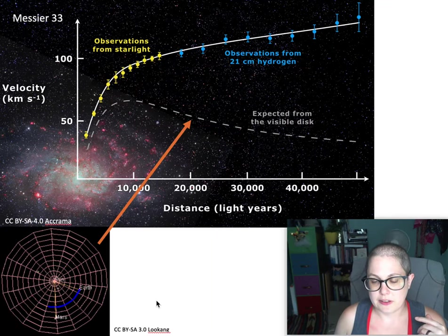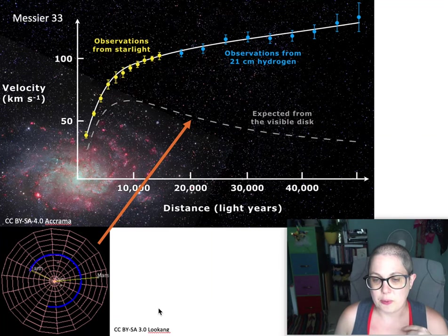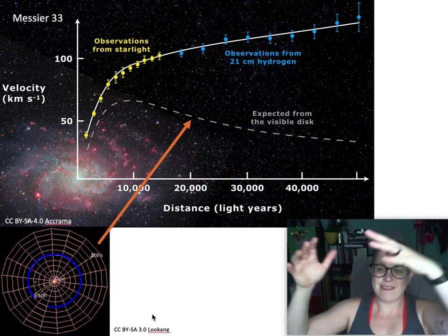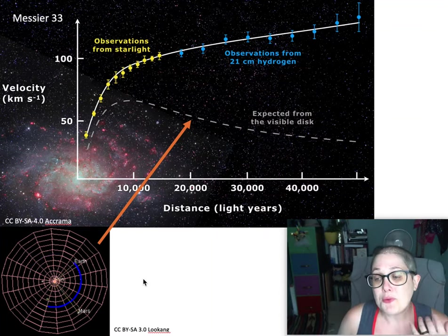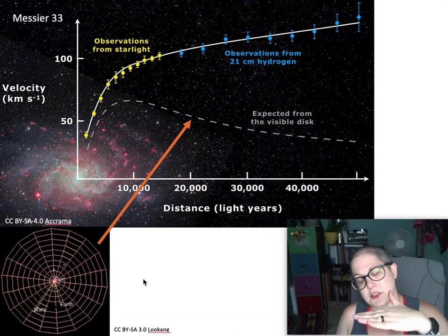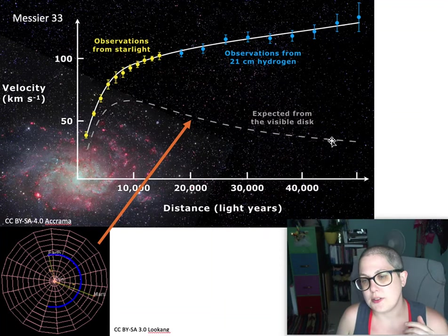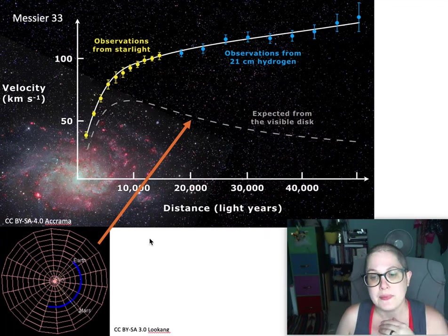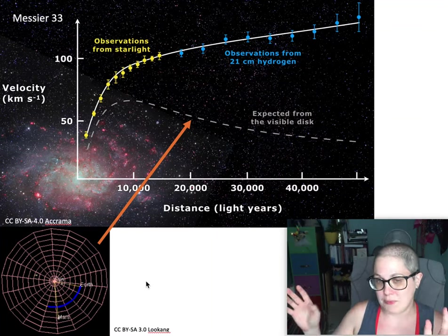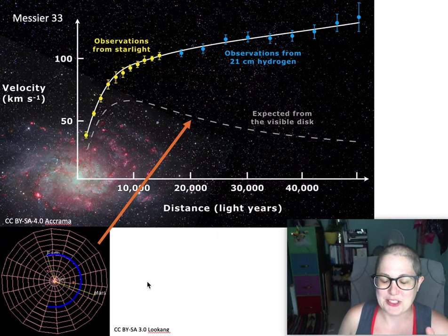Where else have we seen things orbit at different speeds? Solar system. Remember Kepler's third law tells us that the further out you go in the solar system, the lower your velocity, it's slower. You can see the planets orbiting, the fastest ones in the center: Mercury, Venus, then you have Earth, then you have Mars which is slower and obviously a lot more beyond that.